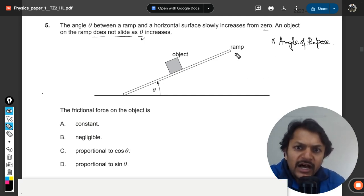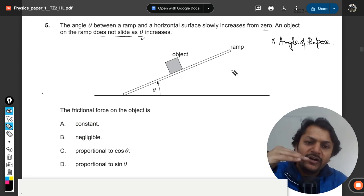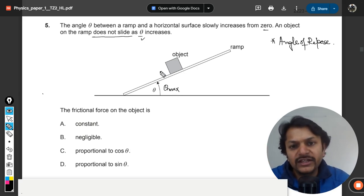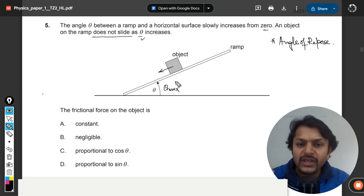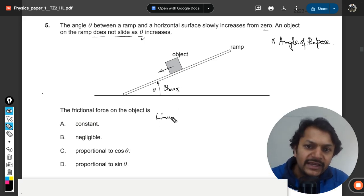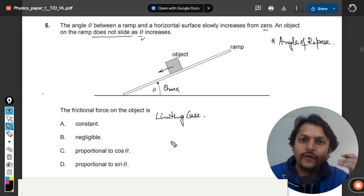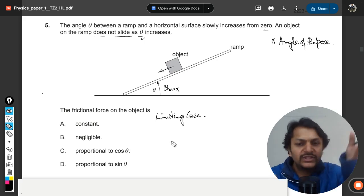Let me explain you what it is. So what is happening here is this ramp when it is increasing its value, so there will be some theta max at which the object will start sliding. So that is called the limiting case.